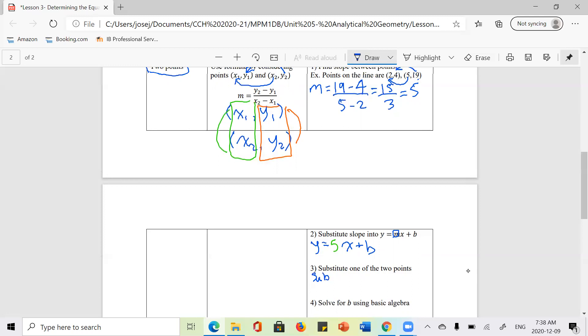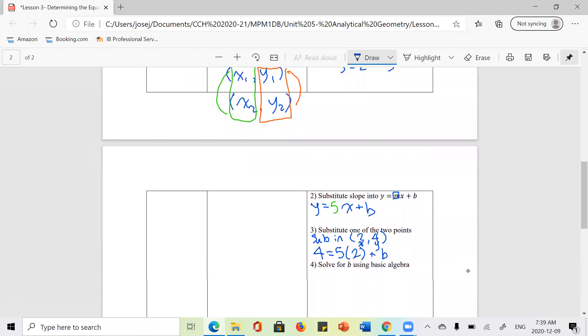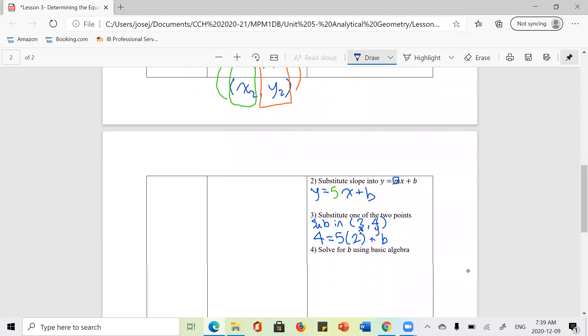I'm going to substitute 2 into x and 4 into y. Because that's my x-coordinate, that's my y-coordinate. So going back to this question here, I'm going to take my 4 value and substitute it into y, and then I'm going to write 5 times 2 plus b. My next step is I'm simply going to carry out the steps here to solve for b.